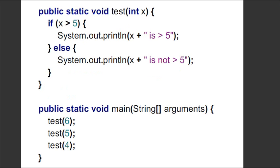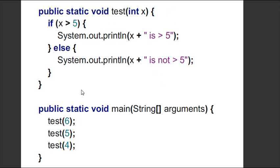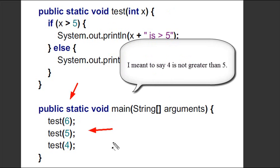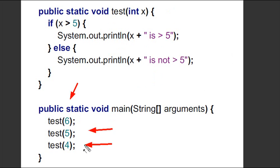Now I've got something pretty cool here — I'm checking two things. If the value is greater than five, print that it's greater than five; if not, print that it's not. So the results for my three tests will be: six is greater than five, five is not greater than five, and four is not greater than five. That's how the if-else statement works.